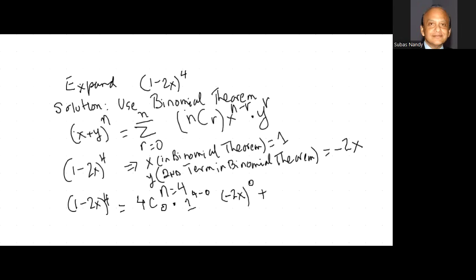Next, r is 1, so we have 4C1. Remember r varies from 0 to 4. Multiply it by 1 raised to the power of 4 minus 1, and then minus 2x raised to the power of 1.